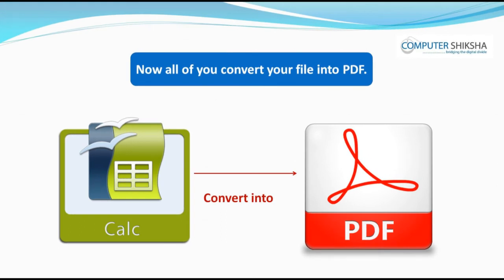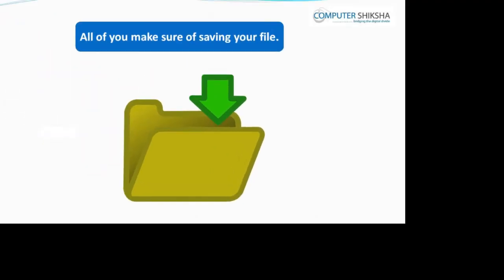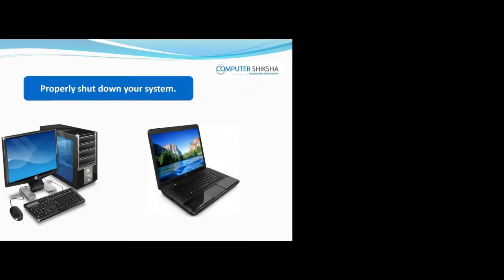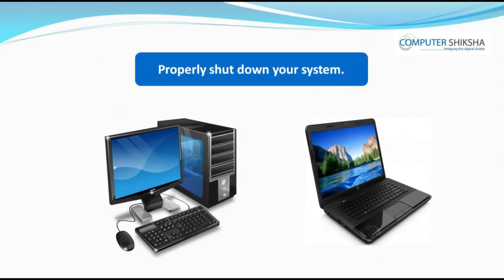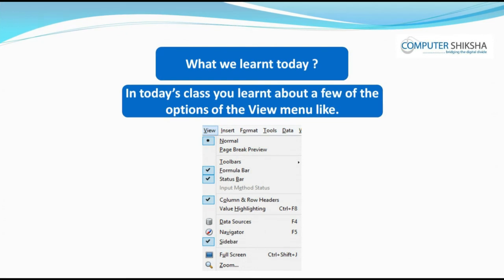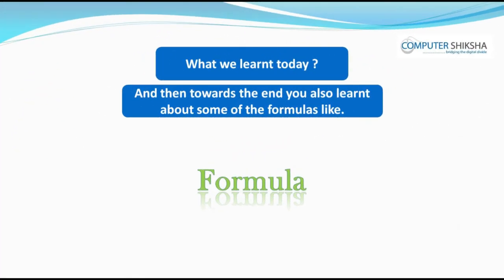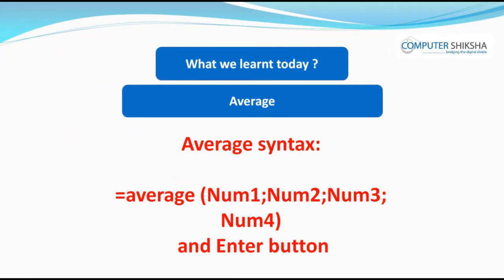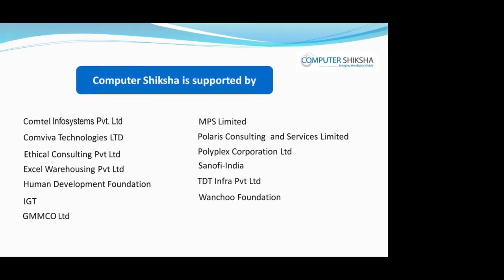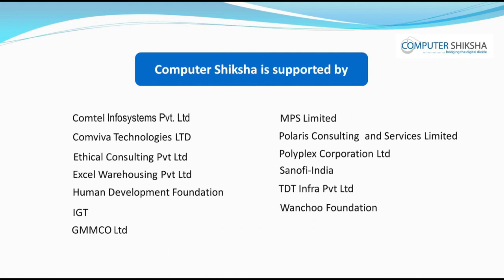Now, all of you go ahead and show how you will convert your file to PDF, then save your file and properly shut down your computer. In today's class, you learnt about a few of the options of the View menu like Normal, Page Break Preview, Toolbar, Column and Row Header, Value Highlighting, and Zoom. And then towards the end, you also learnt about some of the formulas like Sum, Average, Max, and Minimum. Computer Shiksha is supported by. Thank you.